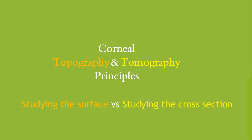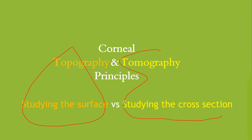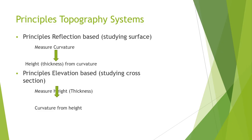So there are two terms now. Corneal topography is the studying of the surface, and corneal tomography is the studying of the cross section. Actually what our machines are doing nowadays is corneal tomography, which is the studying of the cross section of the cornea. Though we are doing tomography, we will use the term topography throughout because it's the most popular term.